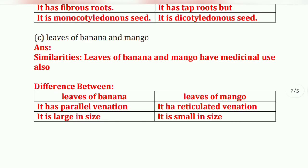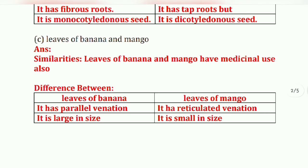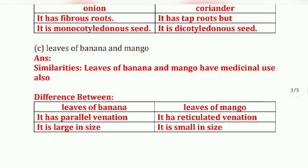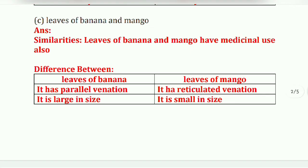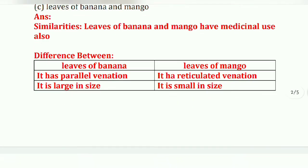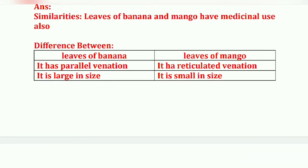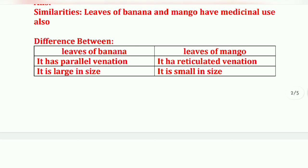Third: leaves of banana and mango. Similarities: leaves of banana and mango both have medicinal use. Differences: banana leaves have parallel venation and are large in size, while mango leaves have reticulate venation and are small in size.